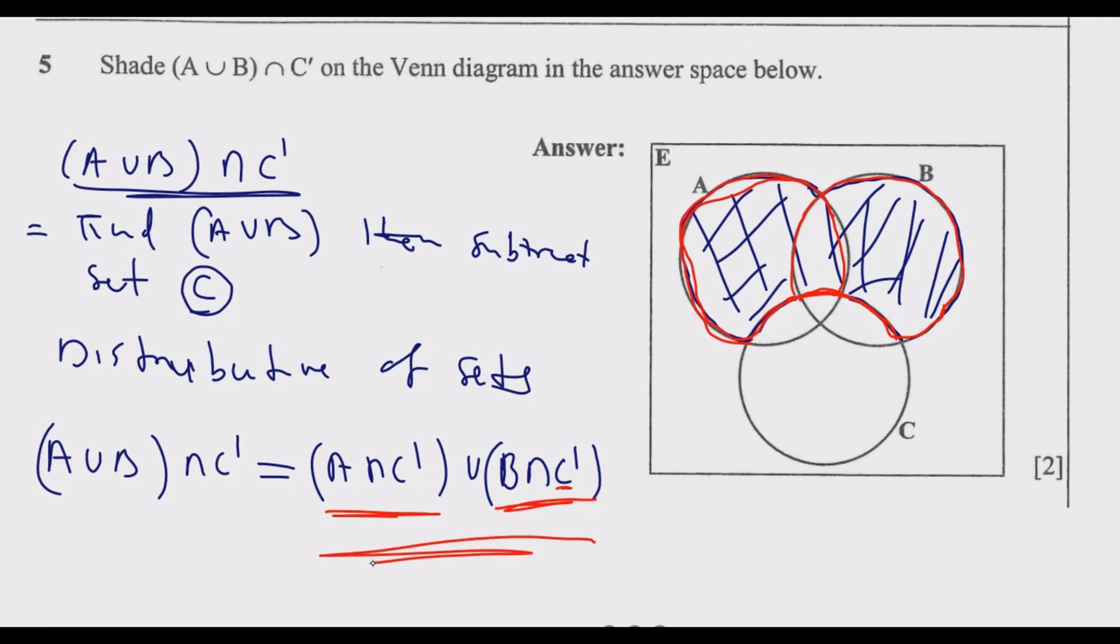What is key is understanding what is C complement. Complement means what is not in C, what is not in that particular set. Union means you are combining the two sets to form one set. Whether there are three, you are combining them to form one new set. Remember, if there is anything which is repetitive, you don't count it twice, you only count it once.